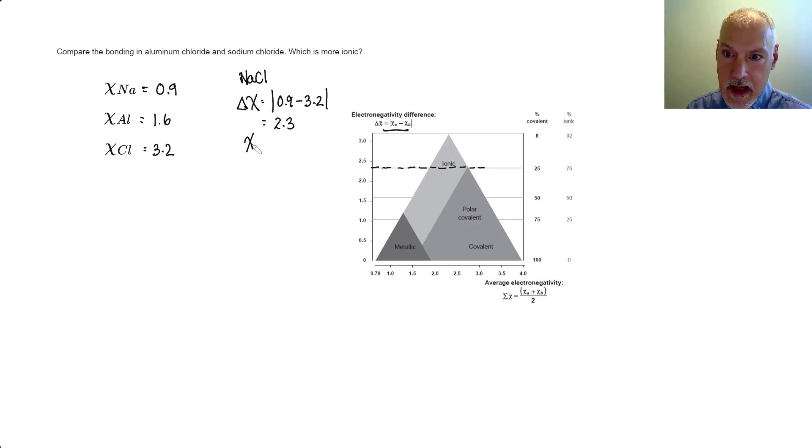And now what's the average electronegativity of my two substances? So 0.9 plus 3.2, divide by two, and I get something around 2.0. And that then if I go straight up from there, takes me to a position right there. So that's where I would find my sodium chloride. So if I was to look at describing its particular bonding, I can see over here that it's about 75% ionic in nature.